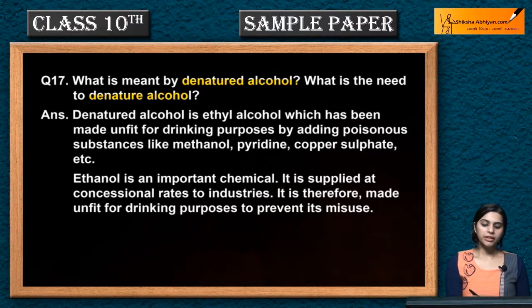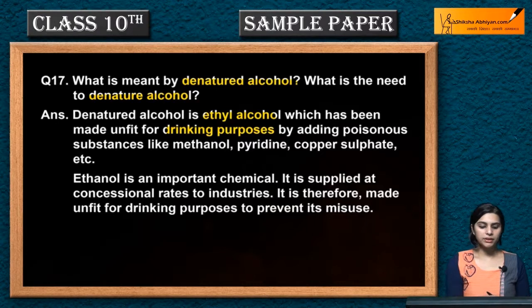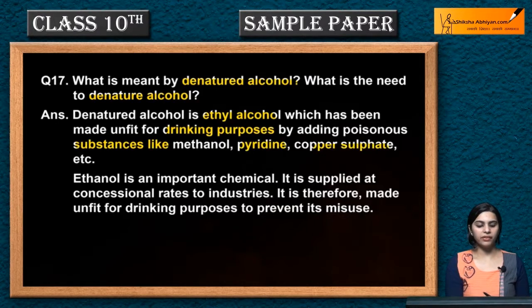Denatured alcohol is ethyl alcohol which has been made unfit for drinking purposes by adding poisonous substances like methanol, pyridine, copper sulfate, etc.